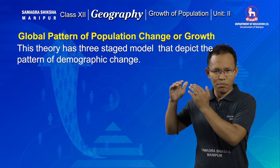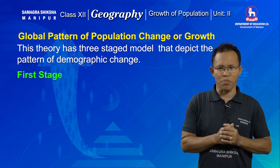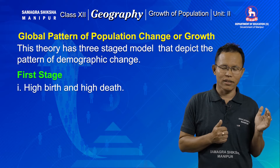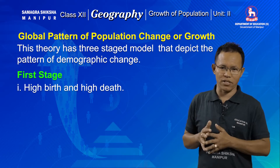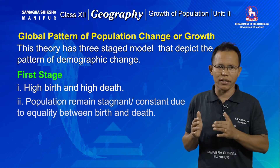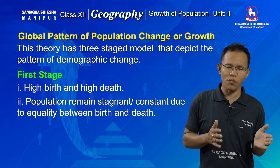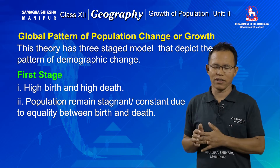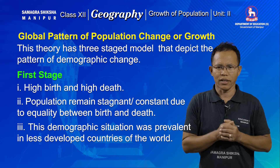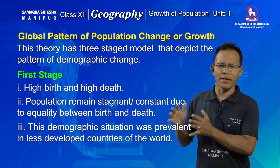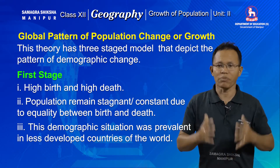The first stage is characterized by high birth and high death. Therefore the net change in population or the growth of population in the first stage remains stagnant because of the equality between birth and death. This first stage of high birth and high death is mainly prevalent in less developed countries of the world.